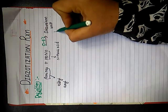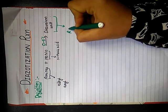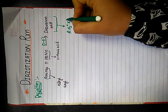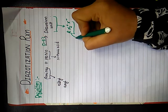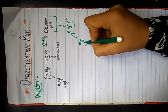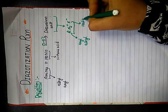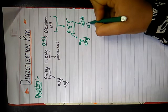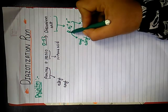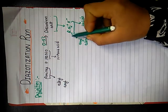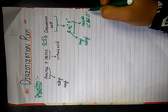Now let's discuss what is diazonium salt. Diazonium salt is a compound having the general formula R-N₂⁺ X⁻. This is the general formula of diazonium salt, where R may be an aryl group or alkyl group, and X is any of the halides — it may be chloride, bromide, or iodide.